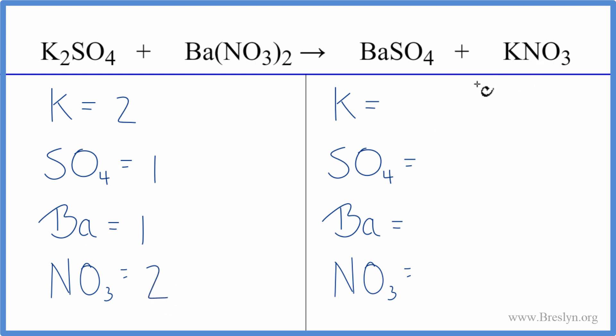On the product side we have one potassium, one sulfate, one barium, and one nitrate. Because we count these polyatomic ions as one thing, it becomes very clear that all we really need to do is double our potassium and double our nitrate. We can just put a coefficient of two in front of the KNO3. One times two—we've balanced our potassiums. Our one nitrate here times two gives us two nitrates and we're done. This equation is balanced.